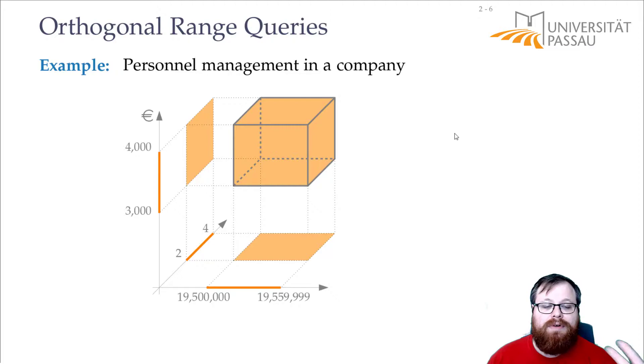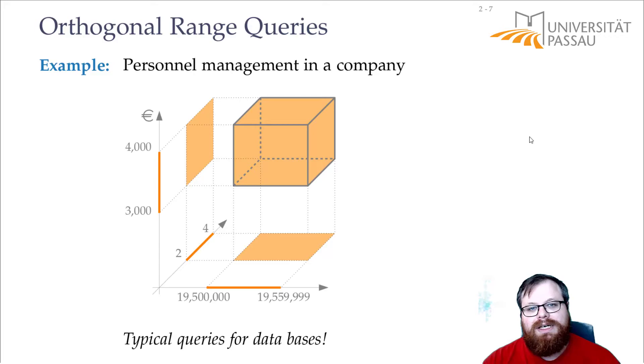And then you have a three-dimensional problem. You have three properties. You want to find an orthogonal query, a three-dimensional orthogonal query which here is a cube. And these are typical queries for databases. You have some range, you want to find everything within this range for all these properties.